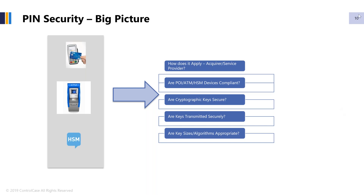To summarize the big picture: where does PIN security apply? It applies to any place where you are entering PIN data — that could be point of sale, ATMs, or back-end HSMs for the management of PIN data. The key questions are: are my devices compliant, are the cryptographic keys secure, are the keys transmitted securely, and are the key sizes and algorithms in use appropriate? Hopefully this simplifies it to a level where you can start thinking about what PIN security generally means.